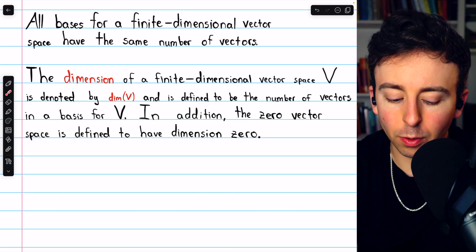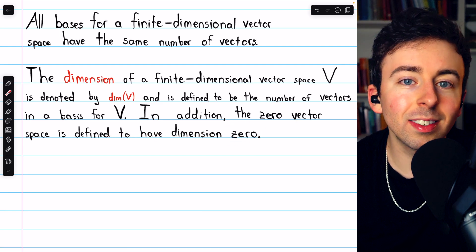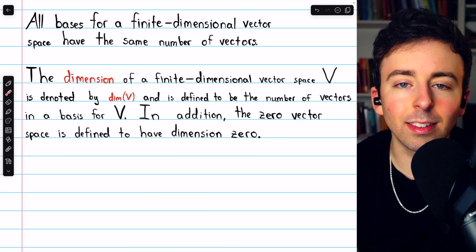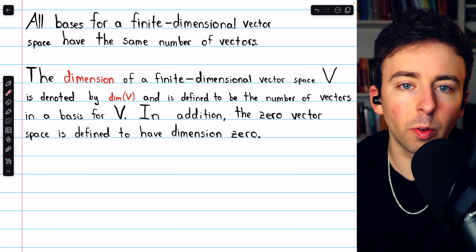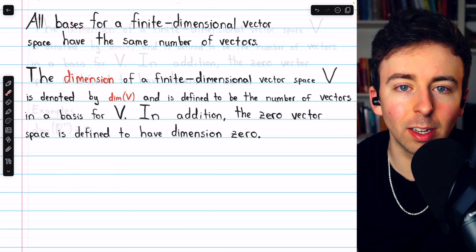In addition, the zero vector space is defined to have dimension zero, which is consistent with the fact that we consider the basis for the zero vector space to be the empty set. The basis has zero vectors, so the dimension is zero.